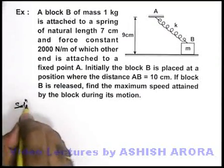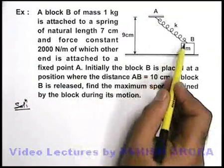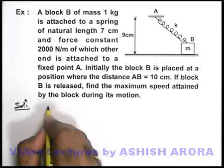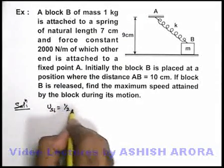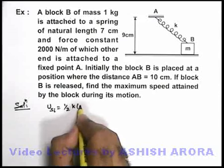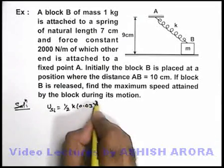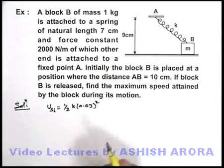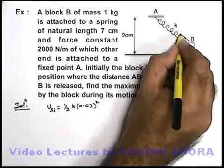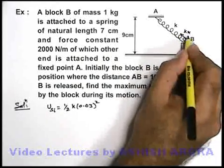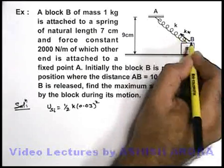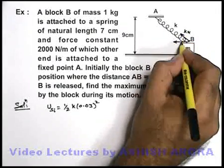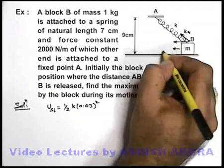In this solution, we have a look very carefully that in the initial situation, the potential energy stored in the spring can be given as half k into 0.03 whole square. Obviously, the spring will exert a force kx, if x is the elongation. kx will be the force acting on the block. Due to the horizontal component of this kx, the block will move toward left.